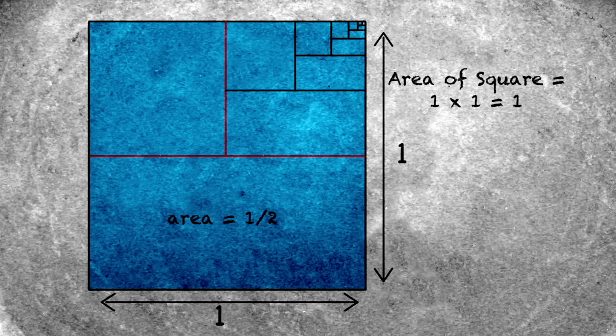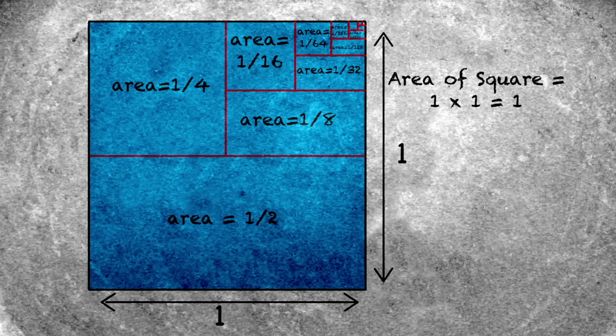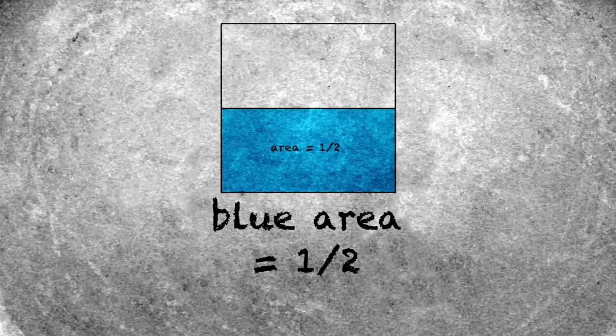The first slice makes two parts, each with an area of one half. The next slice divides one of those halves in half, and so on. But no matter how many times we slice up the boxes, the total area is still the sum of the areas of all the pieces.